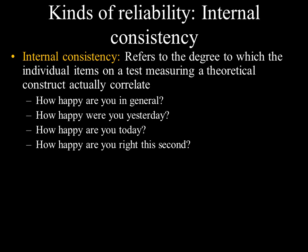Internal consistency refers to the extent that individual items measuring a theoretical construct correlate with each other. You'd expect that answers to questions like 'how happy were you in general,' 'how happy were you yesterday,' 'how happy are you today,' and 'how happy are you right now' would yield similar results — not identical, since yesterday might have been a bad day, but roughly consistent. When different items of a scale all correlate, that shows internal consistency.